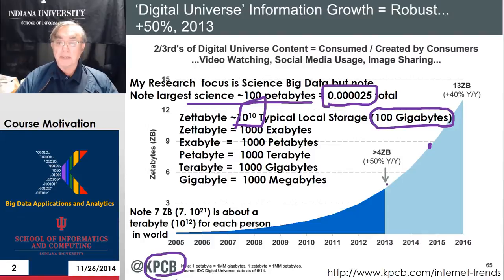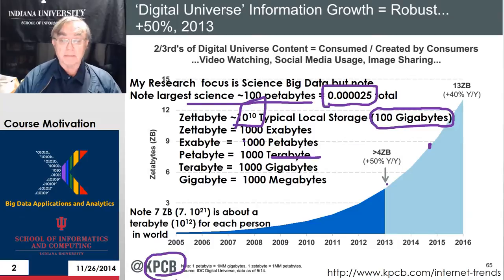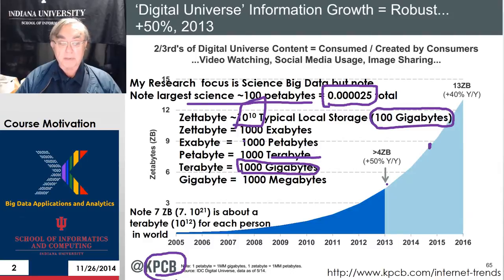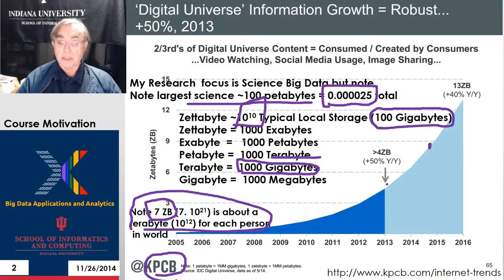An exabyte is a pretty big number — that is 1,000th of a zettabyte. A petabyte is also a pretty big number, and that's a 1,000th of an exabyte. Below that we get to terabytes, which is the size of disks — you can buy two-terabyte disks for about $90 today. Then it comes to gigabytes: 1,000 gigabytes, and 100 gigabytes is typical laptop storage. Notably, 7 zettabytes is about a terabyte per person on the internet today.